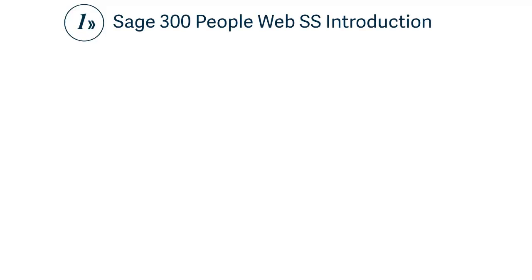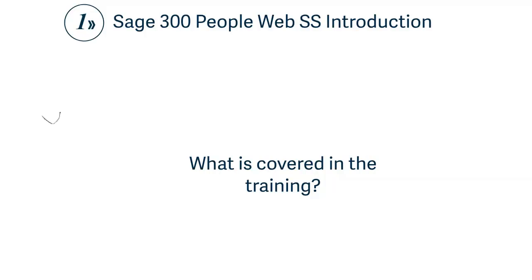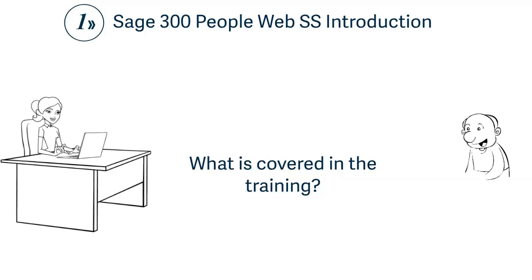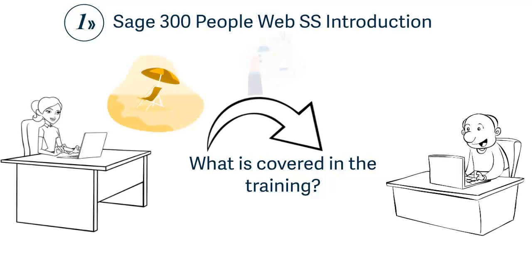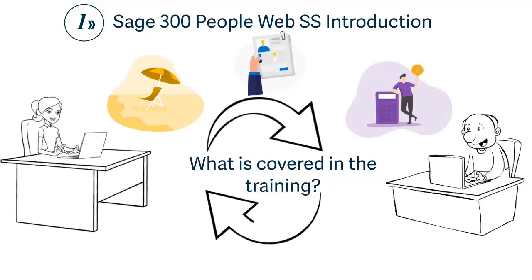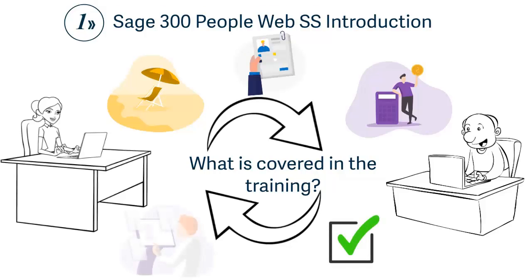What is covered in the Sage 300 People Web SS Introduction training? The Web SS Introduction manual covers only the basic functionalities within Web SS. In this training course, we show you how to apply for leave, make personal detail changes, and submit claims. We also cover how a manager can approve submitted items and how they can submit items on behalf of employees.